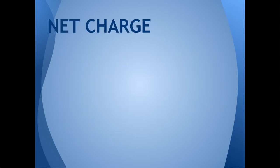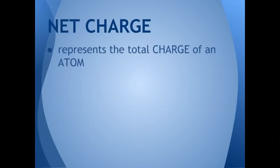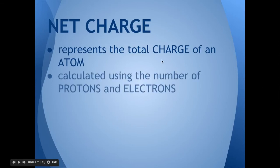Lastly, we're going to talk about net charge, which is basically just the total charge of an atom — 'net' just means total. It's calculated using the number of protons and electrons, since these are the two subatomic particles that actually have charge. Neutrons do not have a charge.